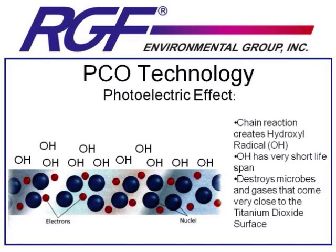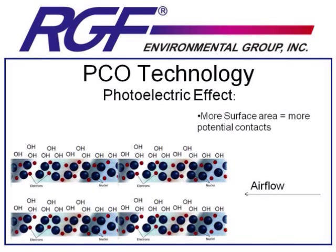PCO devices specifically generate what are called hydroxyl radicals — one oxygen and one hydrogen bonded together. Hydroxyl radicals have a very short lifespan, and because they're so unstable, they're able to destroy microbes or gases that come close to them. However, because their lifespan is so short, they don't leave the surface of the titanium dioxide catalyst, meaning a microbe or gas must literally come into contact with the catalyst surface to be destroyed. The more surface area of titanium dioxide exposed to a UV lamp, the more potential contacts with passing microbes and gases — which is why high-end PCO devices on the marketplace are large units designed to fit the entire duct, maximizing surface area and potential contacts.